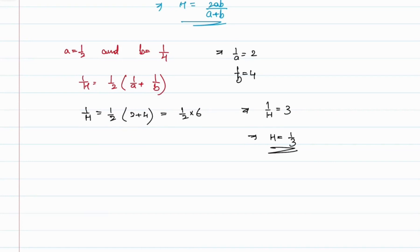Taking the reciprocal gives H = 1/3. This means 1/3 is the harmonic mean between 1/2 and 1/4. Hope you understood well. Thank you.